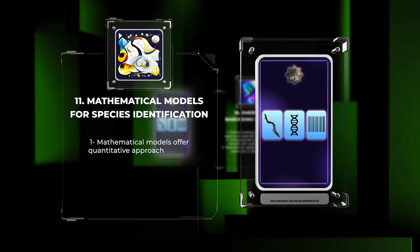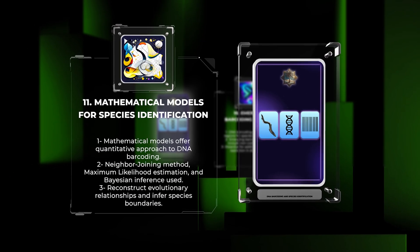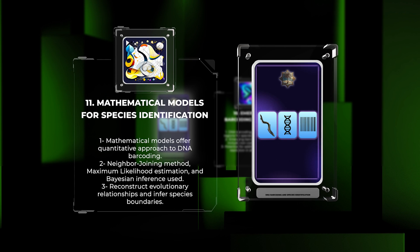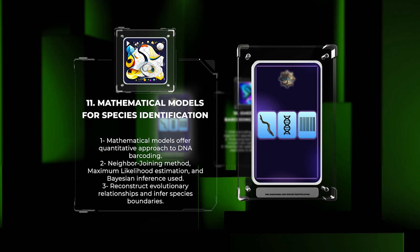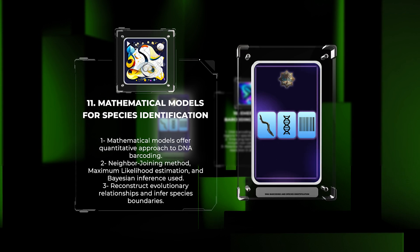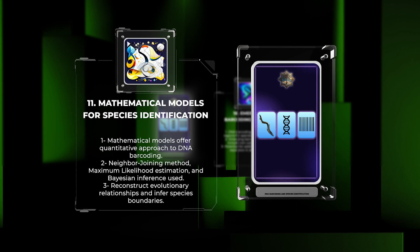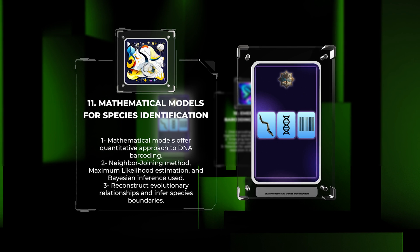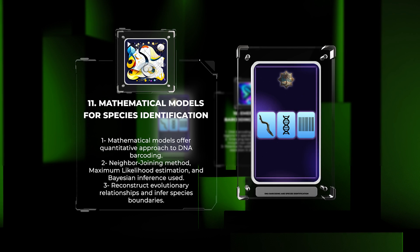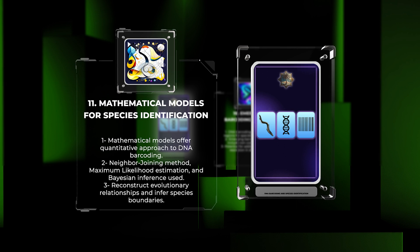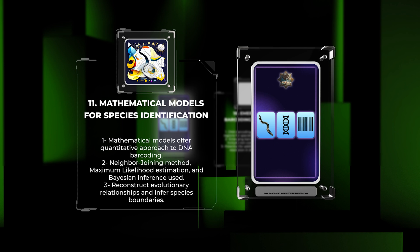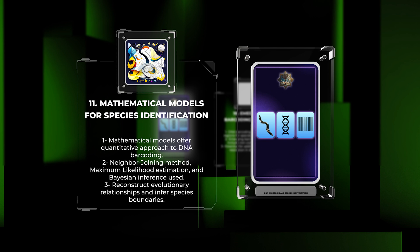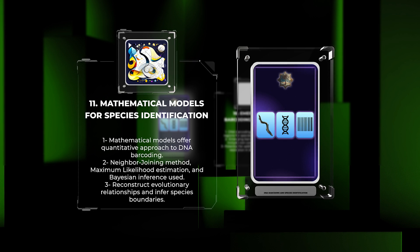Mathematical models offer a quantitative approach to species identification based on DNA barcoding data. Various models, such as the neighbor-joining method, maximum likelihood estimation, and Bayesian inference, are employed to reconstruct evolutionary relationships and infer species boundaries. These models use genetic distance measures, phylogenetic trees, and statistical frameworks to estimate species clusters and their confidence intervals. Mathematical modeling enhances the objectivity and reproducibility of DNA barcoding analyses.